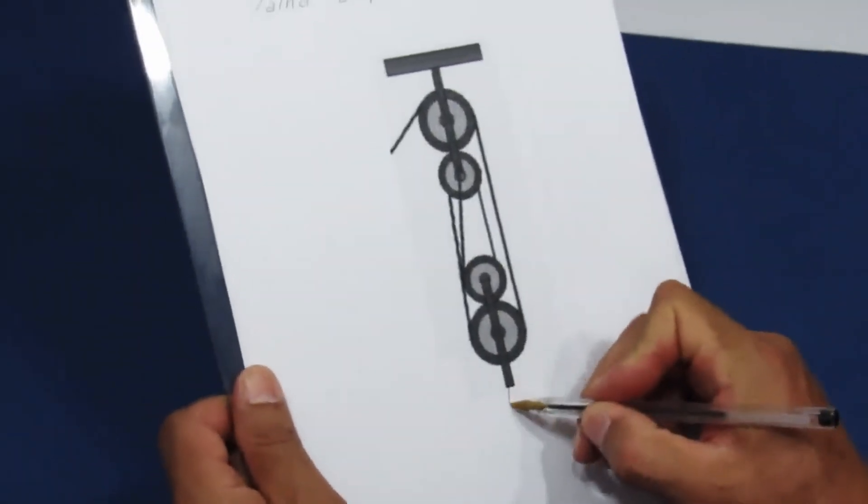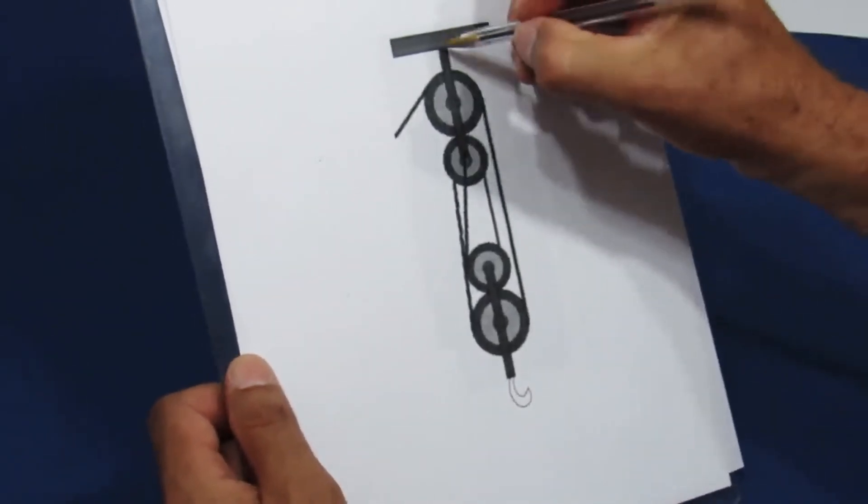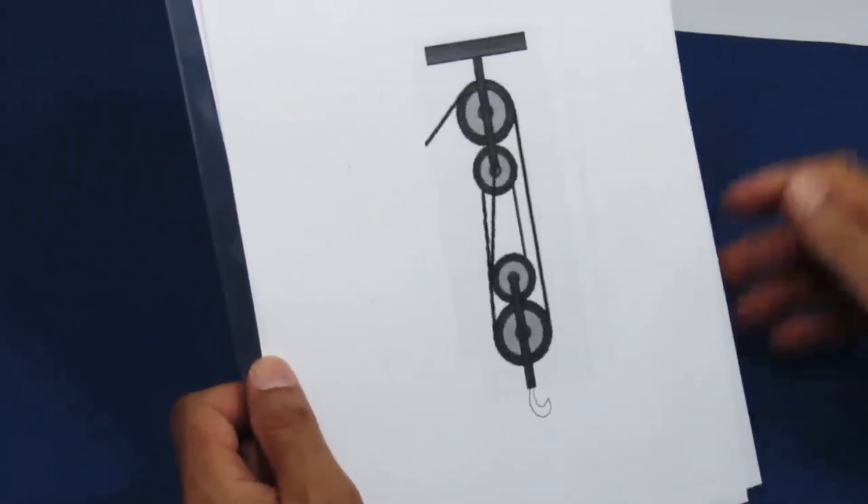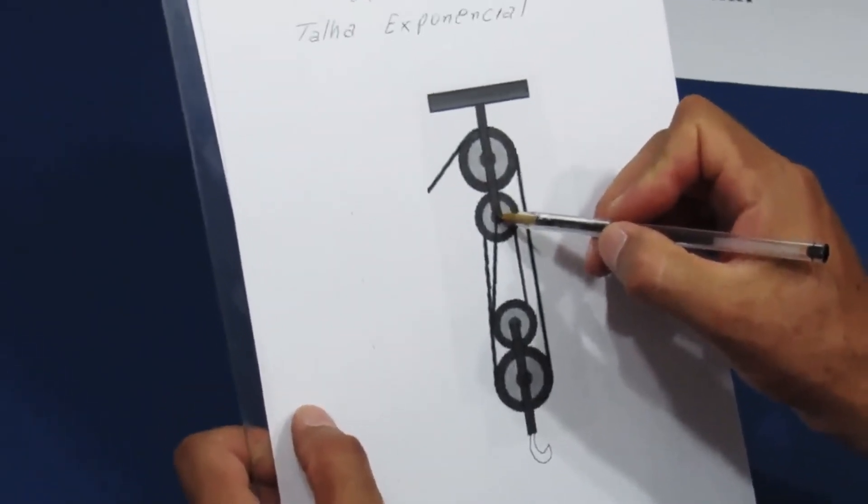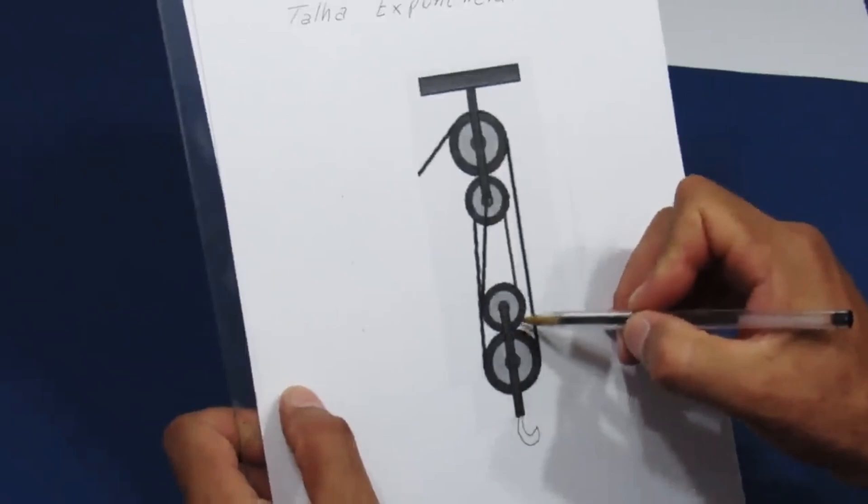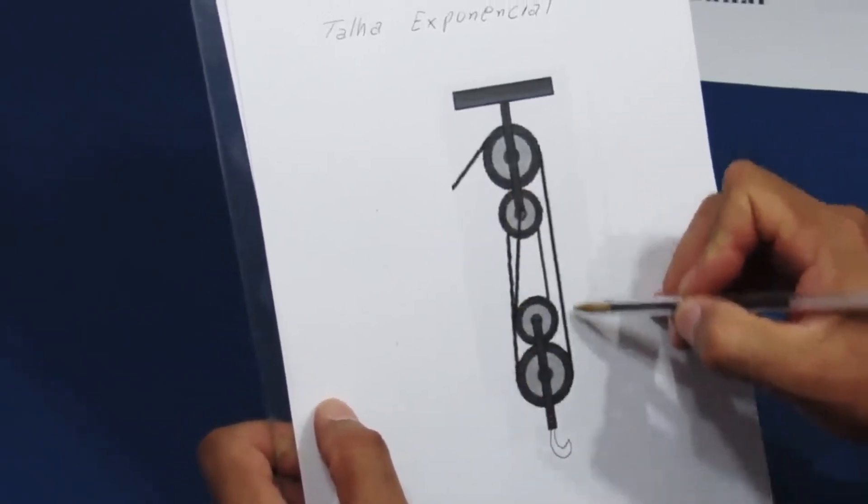These pulleys here are free and here I can put a hook to lift a load. This other part will be fixed at the top. There's a rope that comes out of the center of this pulley here, passes through this one, goes up to the second pulley, and comes down. In a little while, we'll set this up outside.